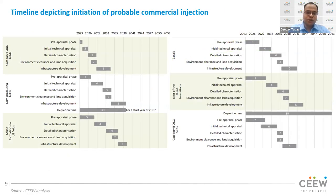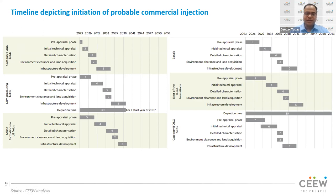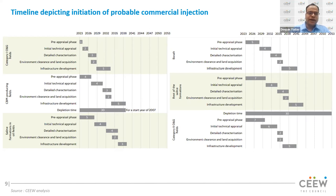Moving from CO2 sequestration potential to the timelines in which this capacity can be realized — we have looked at various types of CO2 sequestration reservoirs, starting from oil and gas fields (very well understood), to saline aquifers (relatively less understood), to basalts (for which we don't have any understanding currently). For each type of reservoir, we've looked at various activities that need to be done before actual CO2 injection materializes, including pre-appraisal phase, initial technical appraisal, and all the way through to infrastructure development.